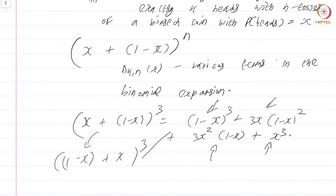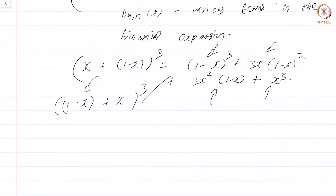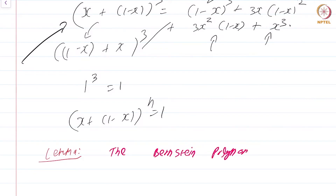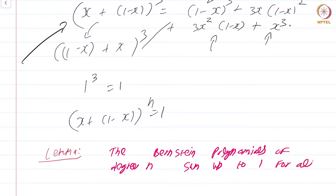Apart from ease of remembrance, note that (x plus 1 minus x) to the n is just 1 to the n, which equals 1. In general, (x plus 1 minus x) to the power n is just 1. So we immediately get the following lemma: the Bernstein polynomials of degree n sum up to 1 for all x in [0, 1].